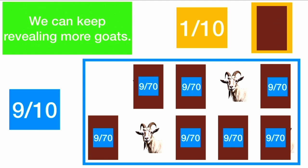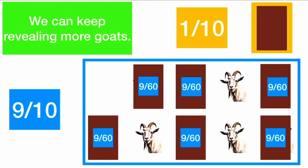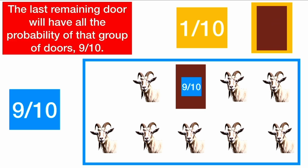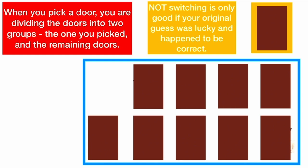We can keep revealing more goats, and that nine-tenths probability will still be distributed between the remaining doors. When all eight goats are revealed, the remaining door now has all of the nine-tenths probability. So should you switch? Yes, you should switch, because your door still only has a one out of ten probability. The last remaining door will have all the probability of that group — nine out of ten. By revealing all the goats, the host is actually revealing information to point you towards the only possible door of that group that could contain the car. Not switching is only good if your original guess happened to be correct.